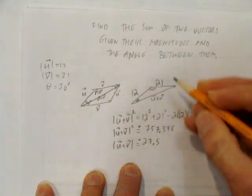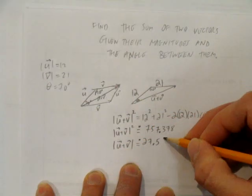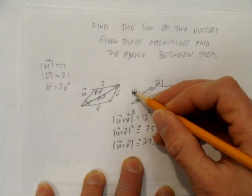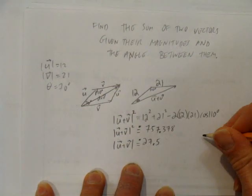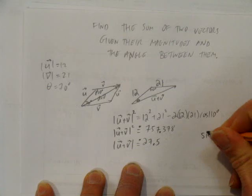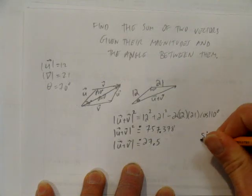I'm going to find theta in here and talk about this sum vector's magnitude compared to this 12, or vector u. I'm going to solve for theta. How do I do that? Sine law. Again, I recommend watching the video on sine law,